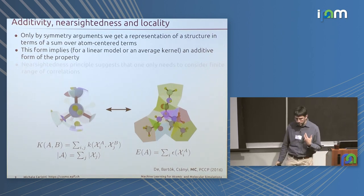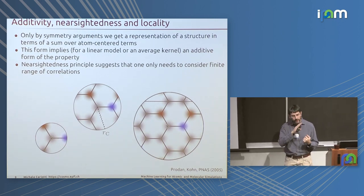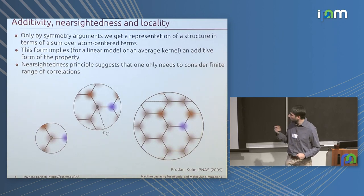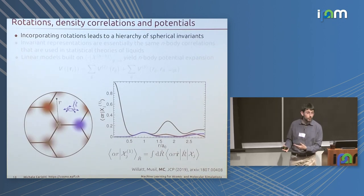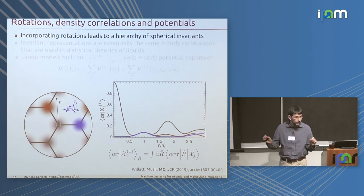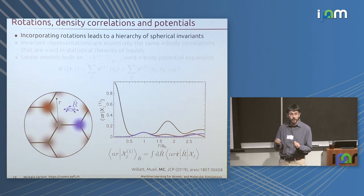This atom-centered decomposition is rooted in fundamental physical principles — the nearsightedness principle of electronic matter, which deals with how the density matrix decays with distance. It tells you that interactions can be limited to a finite range. You also need to obtain something rotationally invariant, which you do by taking the atom-centered density and averaging over the rotation group, giving an explicit invariant representation that corresponds effectively to the pair correlation function: the probability of finding two atoms at distance r.